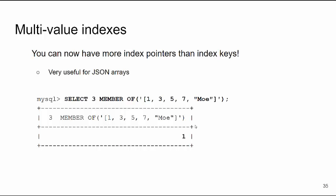Multi-value indexes — if you're using the JSON data type, this becomes very important. Traditionally you have a one-to-one correspondence between what's in the index and what's in the table. But with JSON, we have arrays and arrays of arrays, which needed multi-value indexes. Now you can have multiple entries in the index for one row of data. There's also a new function called MEMBER OF — as you can see here, we're looking for 3 as a member of an array, and it returns 1 saying yes, that value is in that array.